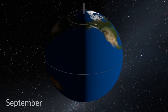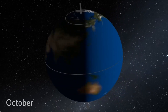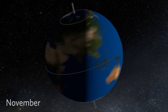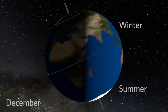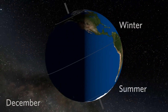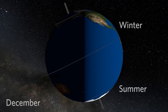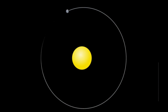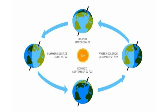The earth rotates on its axis, which is tilted at an inclination of 23.45 degrees from the plane of its orbit around the sun. This means the southern and northern hemispheres have different seasons at any given instant. As the earth revolves around the sun in an elliptical path, there comes a time when the plane of the earth's equator passes through the geometric center of the sun's disk.